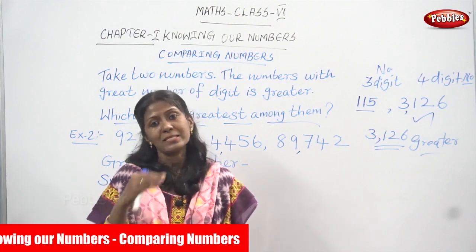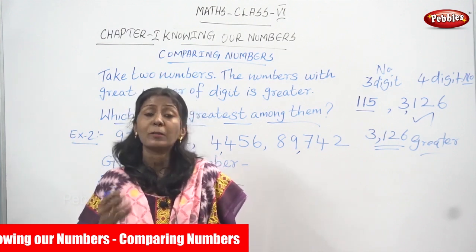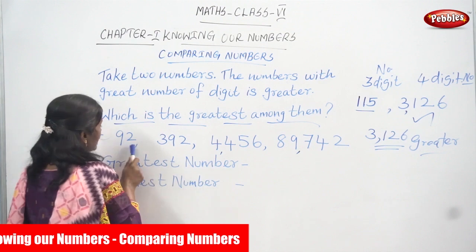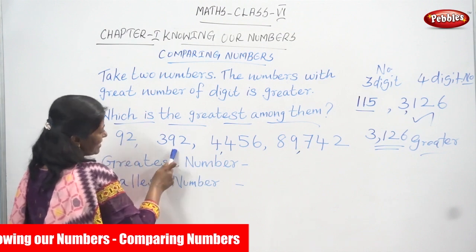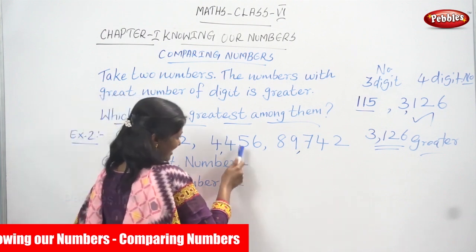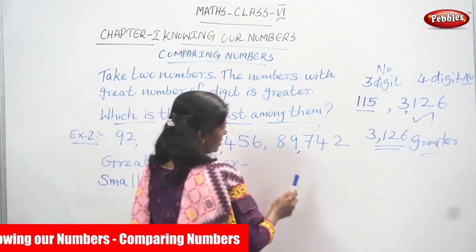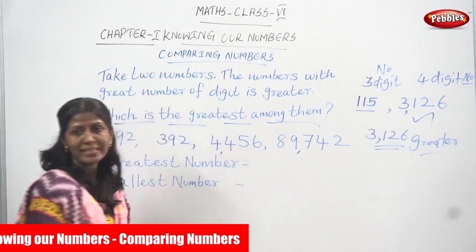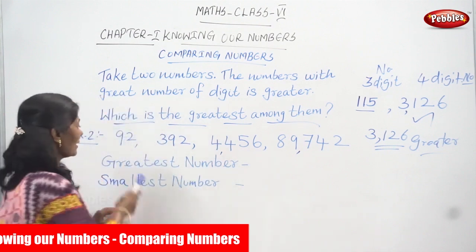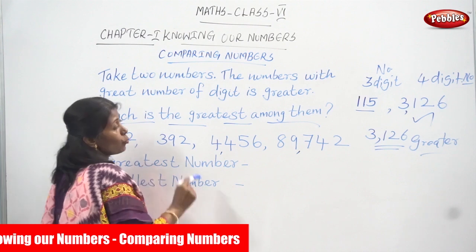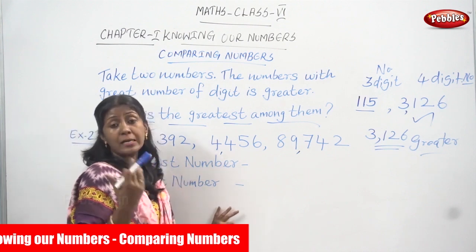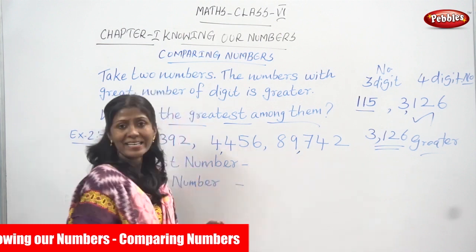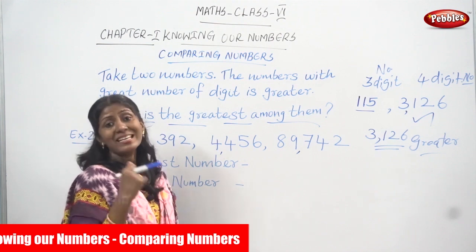If all numbers have the same number of digits, then you go according to place value. Now count the digits: ninety-two has two digits; three hundred and ninety-two has three digits; four thousand four hundred and fifty-six has four digits; and eighty-nine thousand seven hundred and forty-two has ones, tens, hundreds, thousands, ten thousands — that is five digits. The number with the greater number of digits is the greatest number.